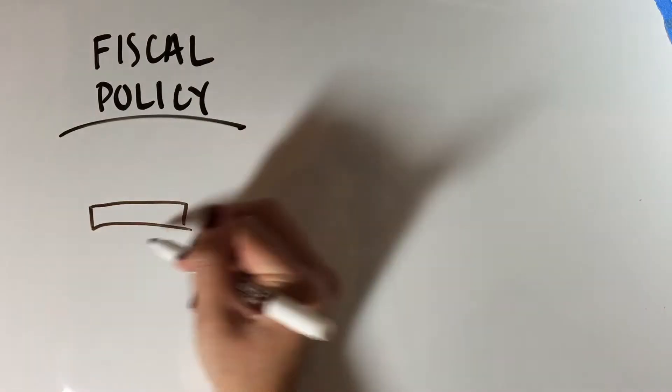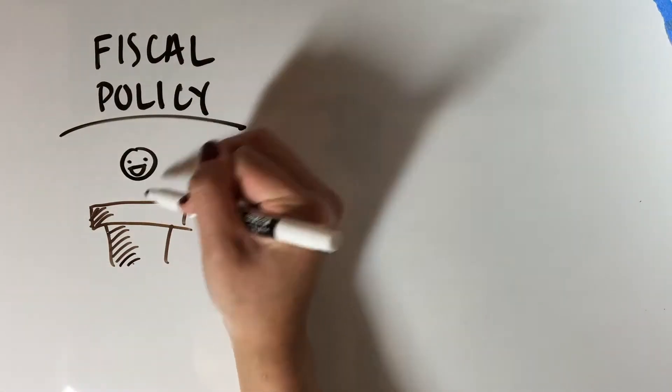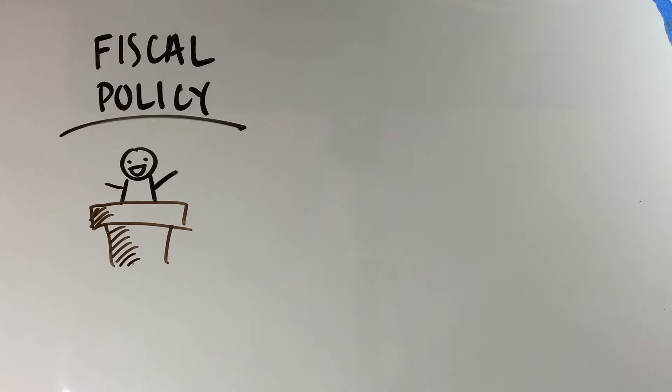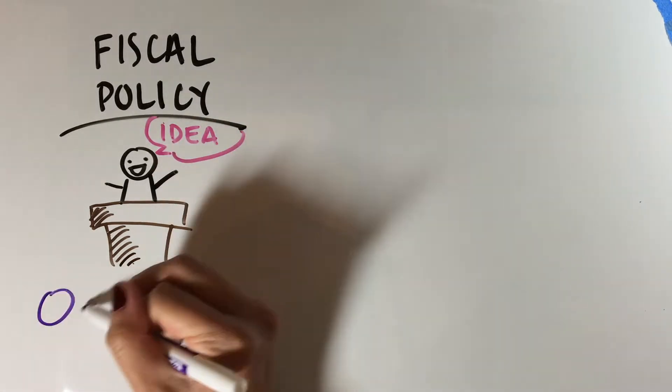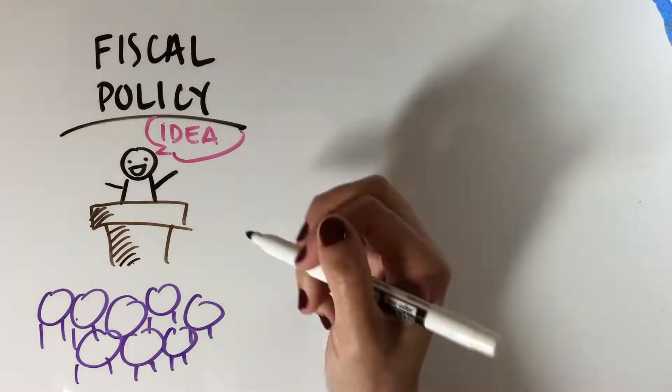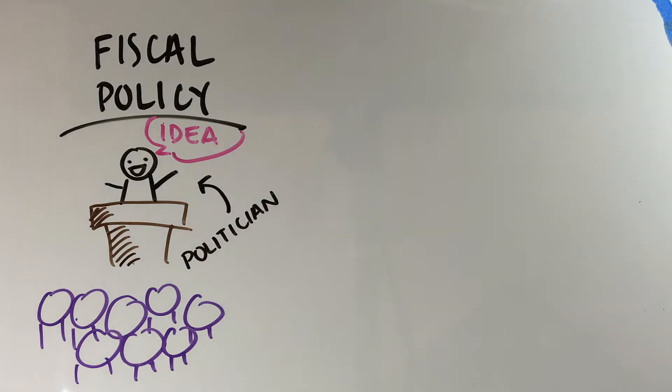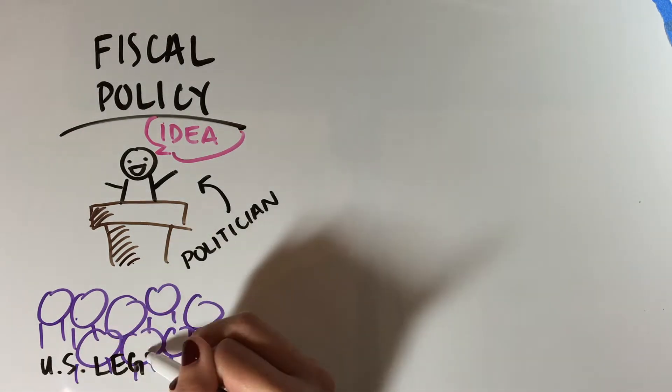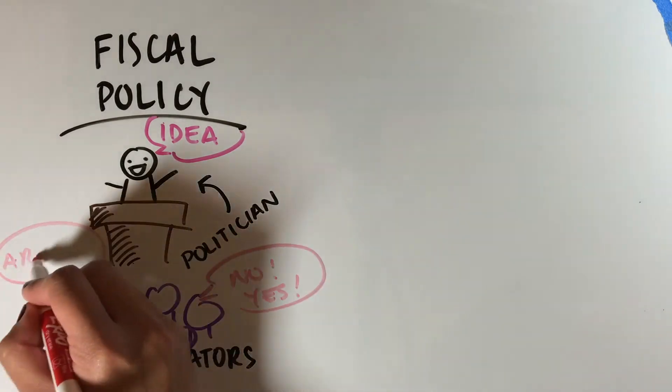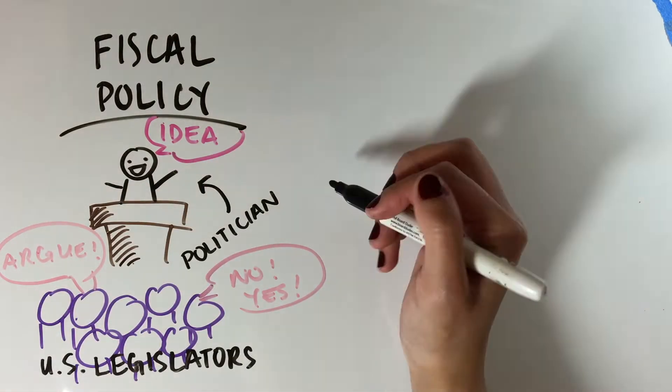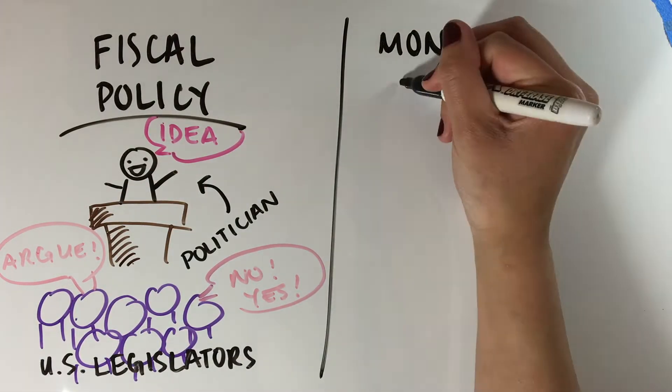Monetary policy is a better choice for solving inflation because fiscal policy is implemented by the federal government. This means that policy decisions take a long time to go through, by which time the economy might be in even more trouble. It also means that decisions are more affected by political goals than what makes the most sense for the economy in the long run.